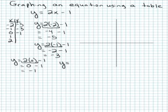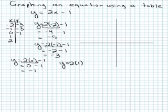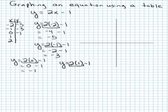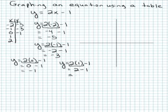Then I'm going to put 1 in place of x. Following order of operations, 2 times 1 is 2, and 2 minus 1 is 1.